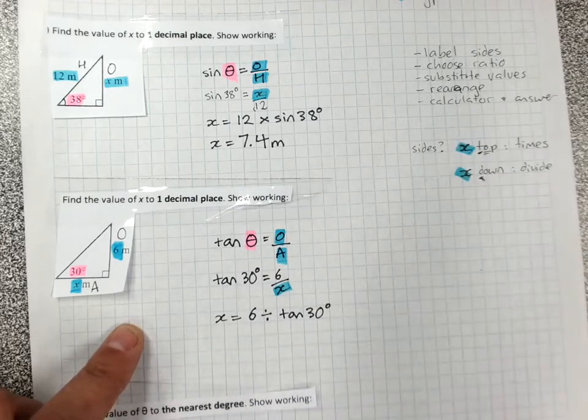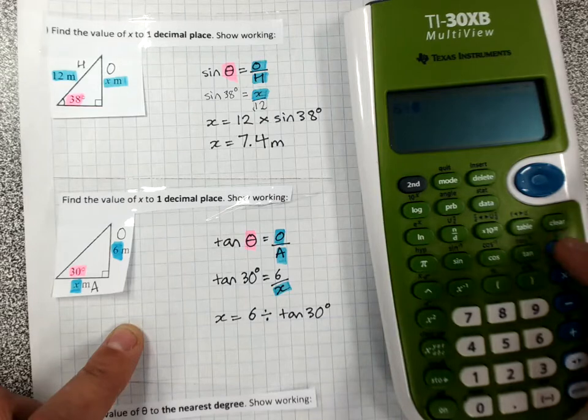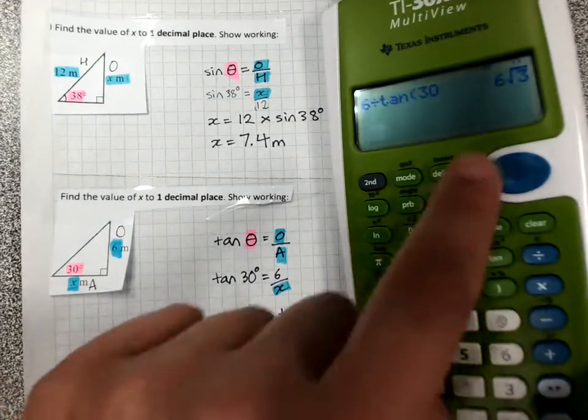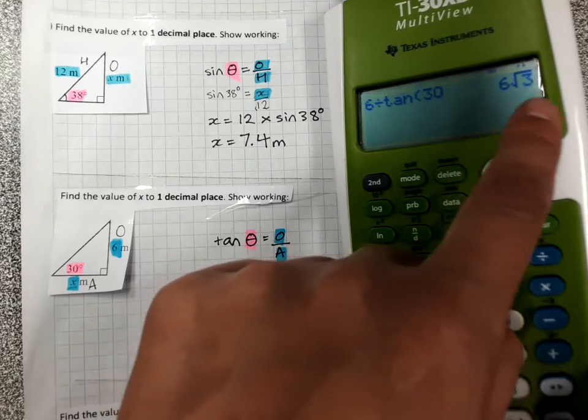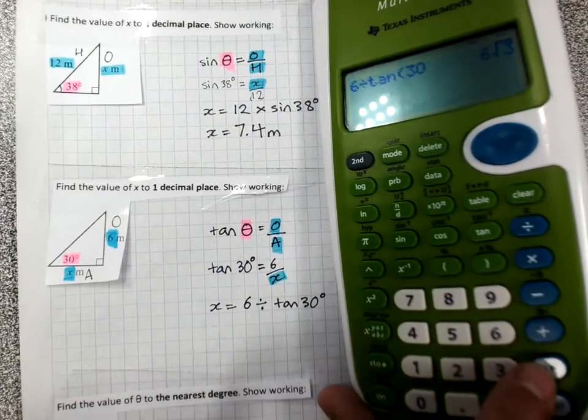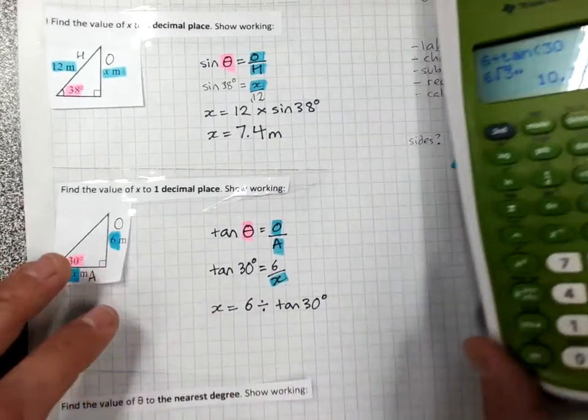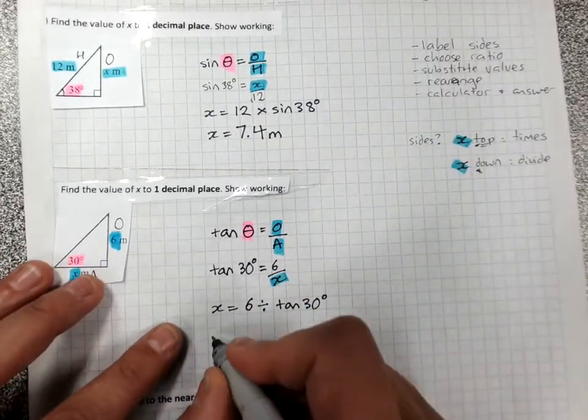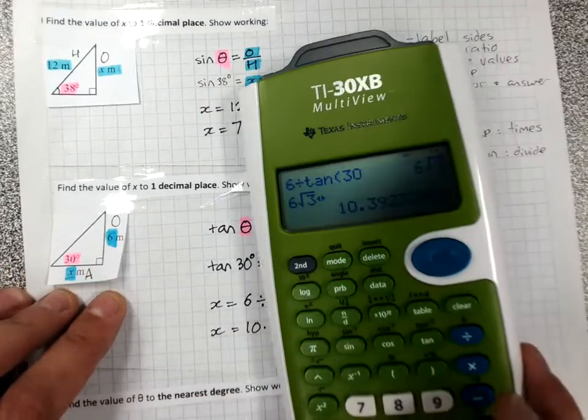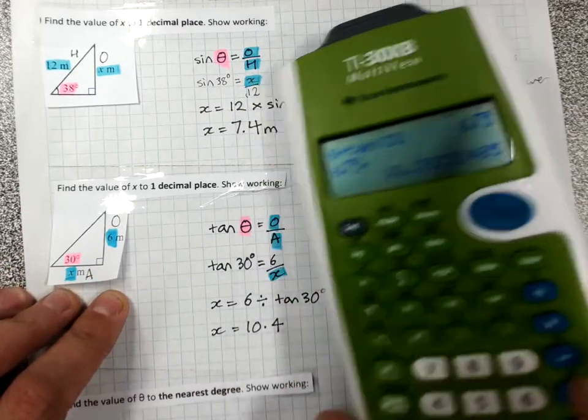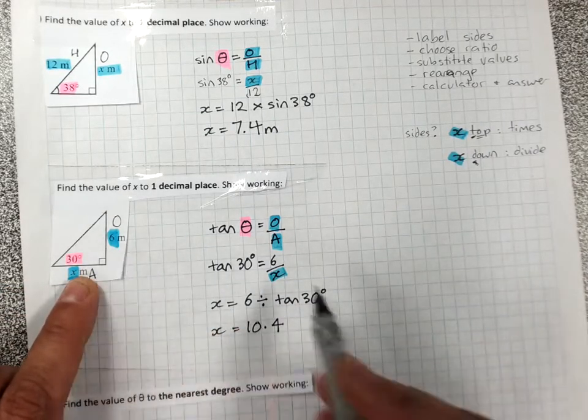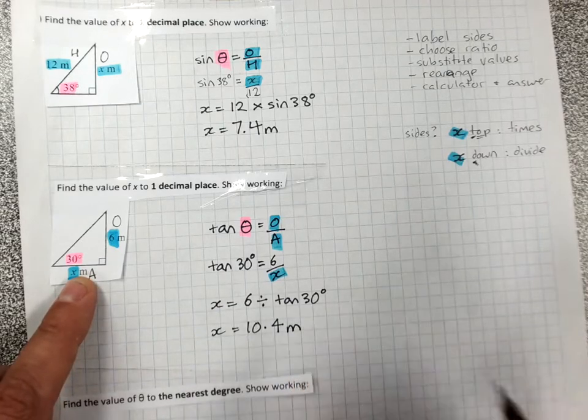And then, calculator and answer. 6 divided by tan 30. Now, if you get a funny answer that's a fraction or a square root or anything like that, remember, two arrow key down here. Please give me a normal answer. One decimal place. So X equals 10.4. And I was finding sides. And look at the sides. That's meters. There we go.